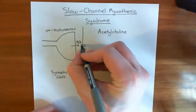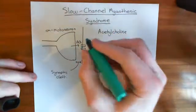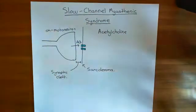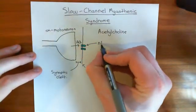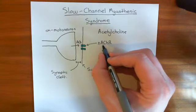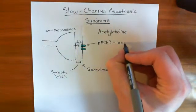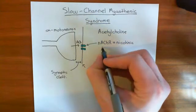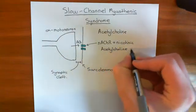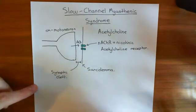I'll draw the nicotinic acetylcholine receptor simply as a structure with a pore down the middle. This is the nicotinic acetylcholine receptor, abbreviated as nAChR — N for nicotinic, ACH for acetylcholine, and R for receptor. Now, even though this is a nicotinic acetylcholine receptor, the form found on the sarcolemma of skeletal muscle cells is not actually sensitive to nicotine — thank goodness.